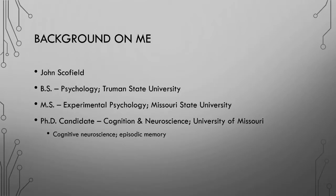First, a little background about me. My name is John Schofield, I'll be your instructor. I kind of bounced all around Missouri — I'm originally from Kansas City. I received a Bachelor of Science in Psychology from Truman State University in Kirksville, Missouri. I then went to Springfield and got my Master's in Experimental Psychology from Missouri State University. And now I'm here in Columbia, currently finishing up my PhD at Mizzou. I study cognitive neuroscience, and specifically my lab looks at the neural underpinnings of human episodic memory.